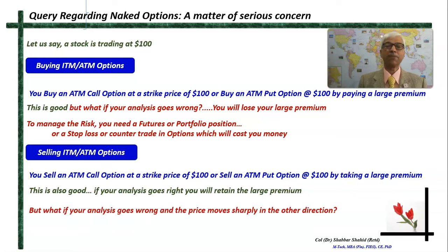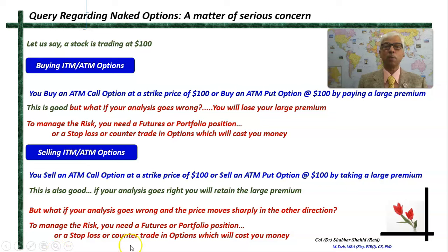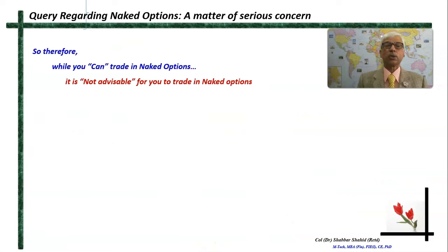But what if your analysis goes wrong? Nothing can be guaranteed. Some turmoil may happen, your analysis may go wrong. If the price moves sharply in the opposite direction from what you anticipated, you will lose heavily and could be bankrupt in a day. So again, to manage the risk you will need a futures position or some portfolio position to offset your losses.